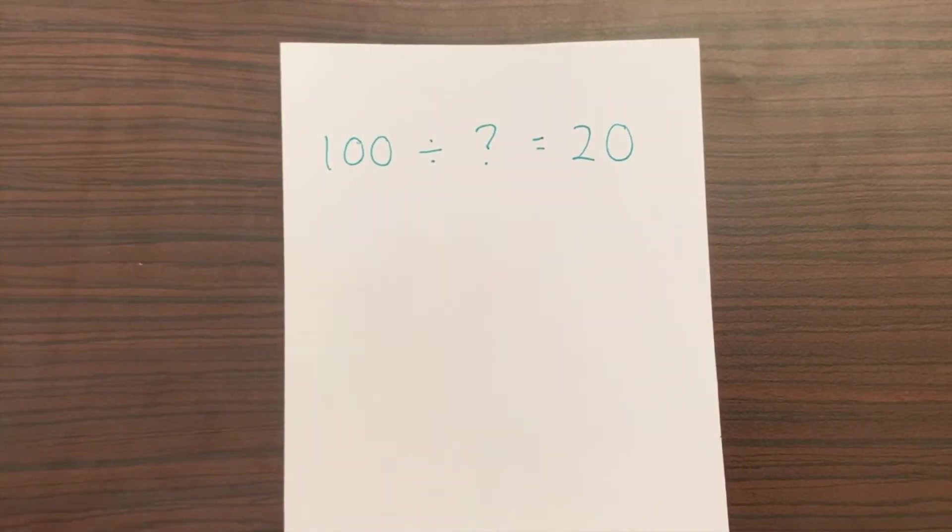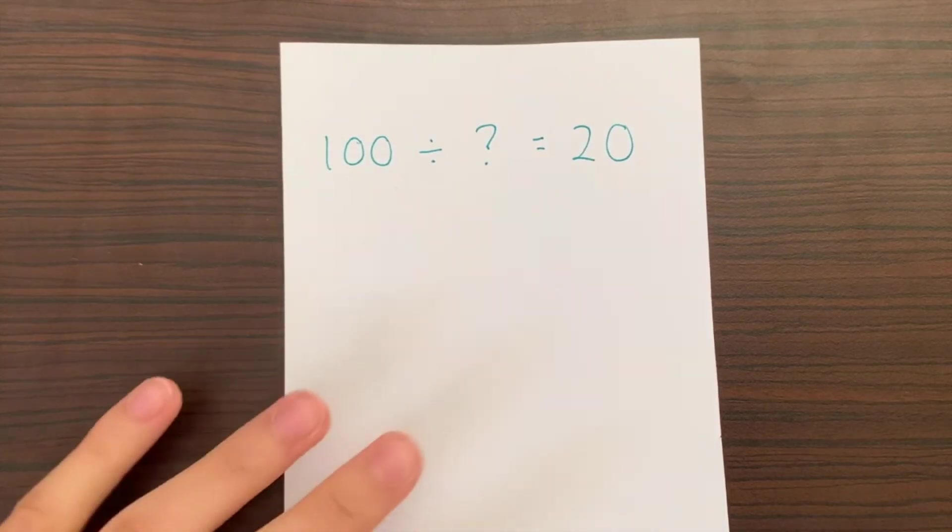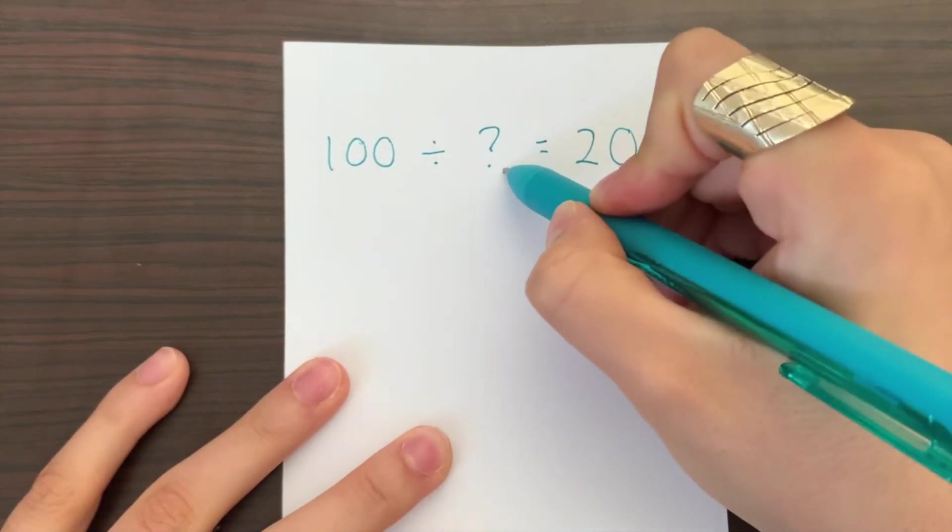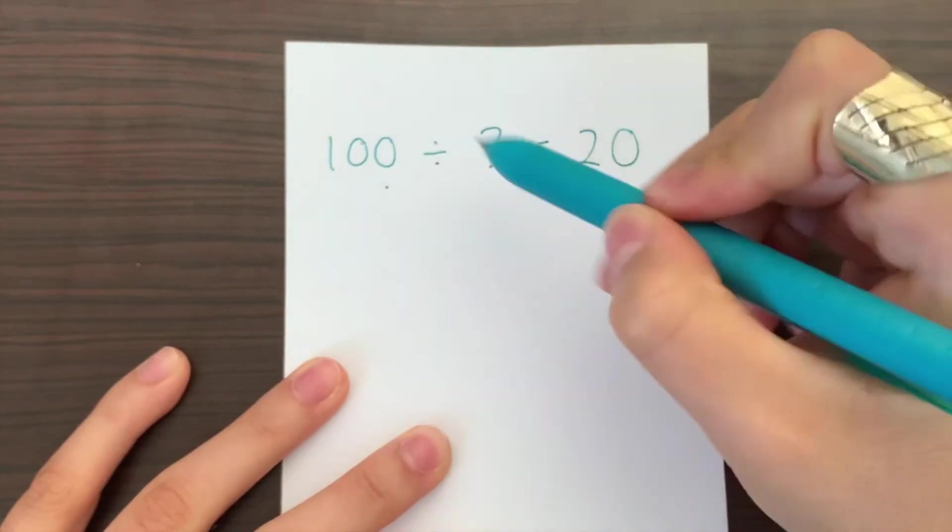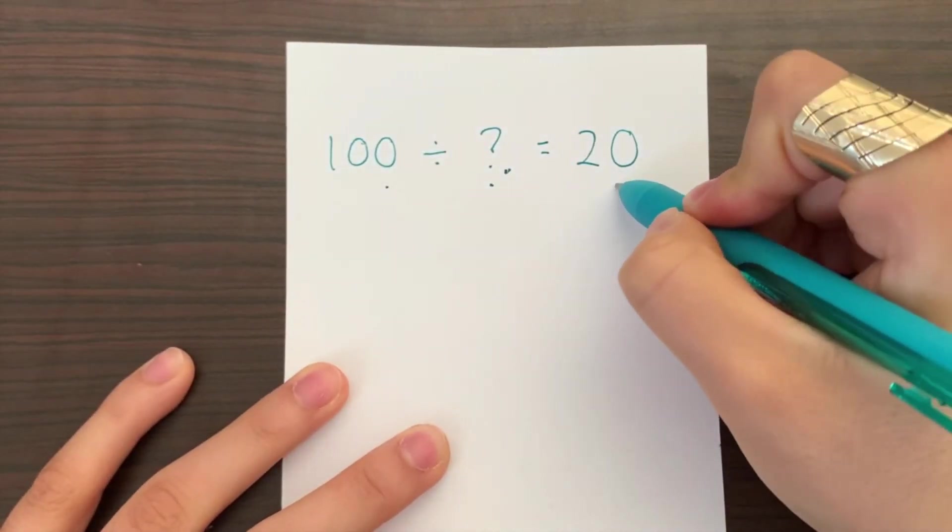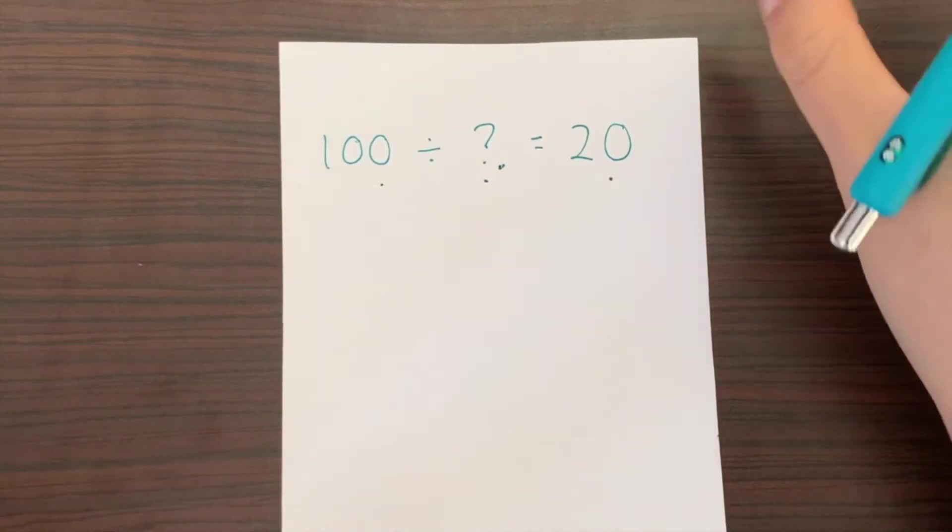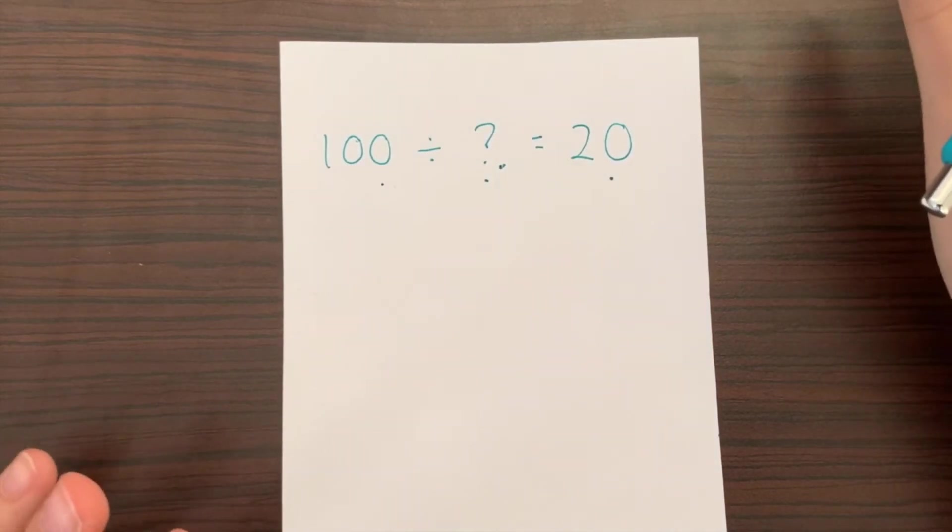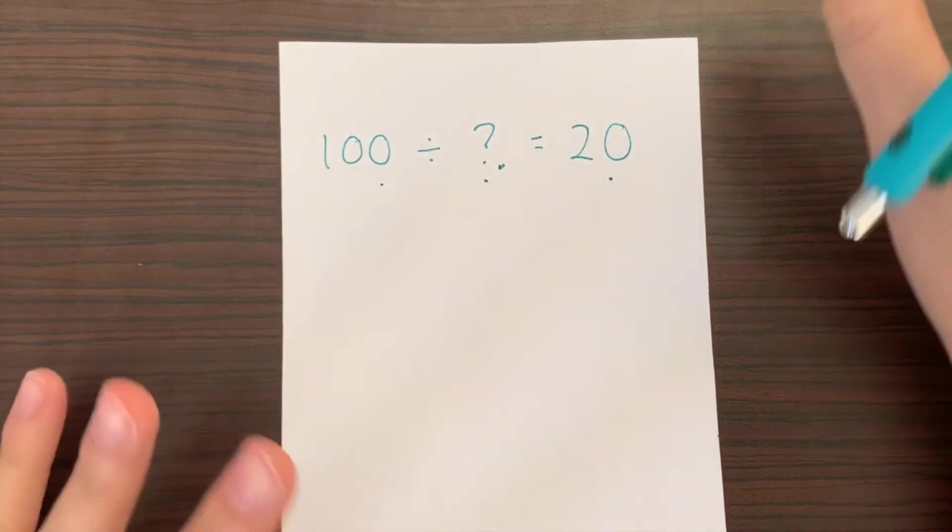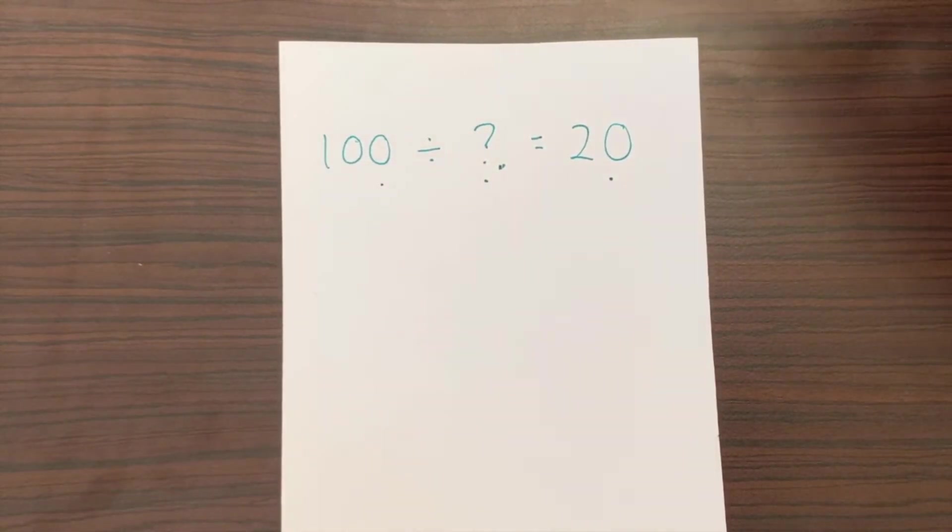Okay, so now for this problem we're working with a slightly bigger number, and again we have a missing number here. But we have what this number and this number is supposed to equal to. So instead of solving it using division, we're going to go ahead and use multiplication to find the missing number in this division problem.